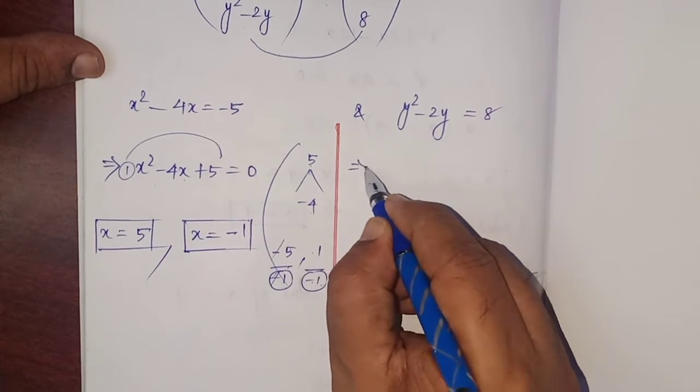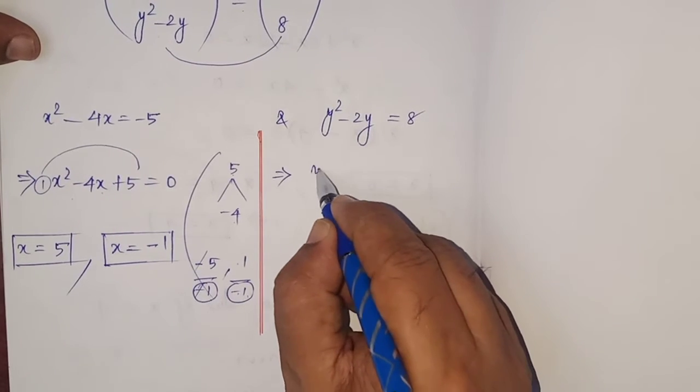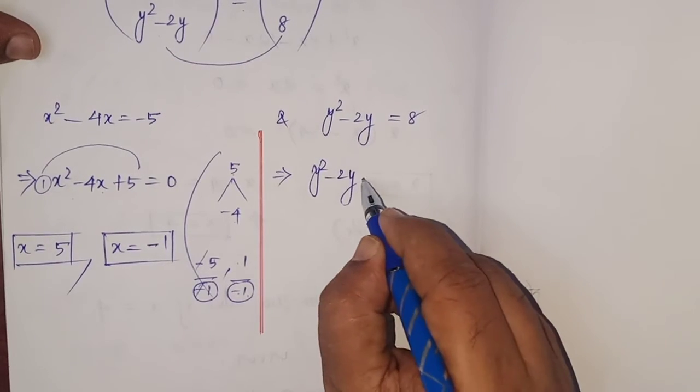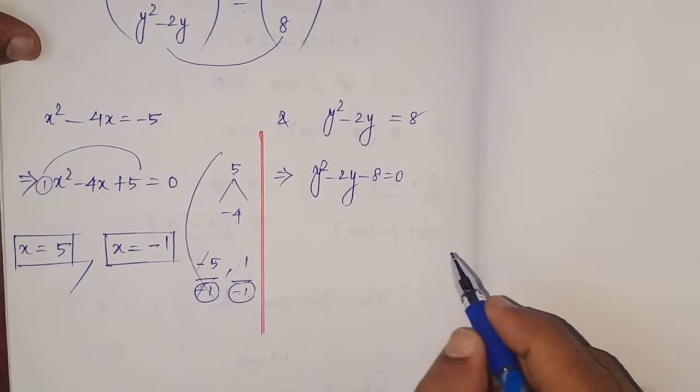Now, second equation. y squared minus 2y plus 8 comes left on side, minus 8 equals 0.